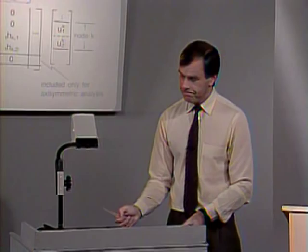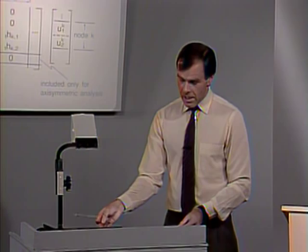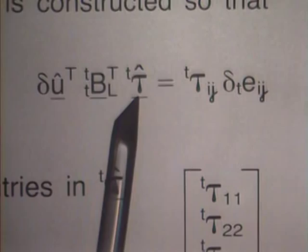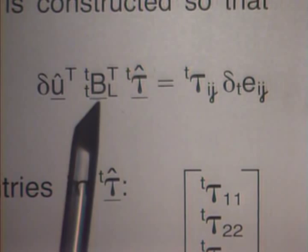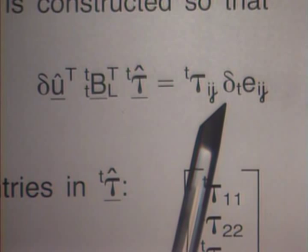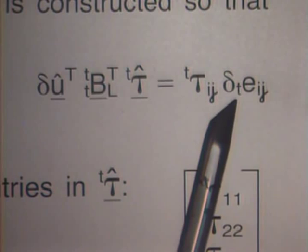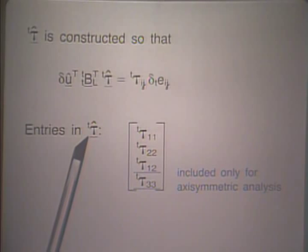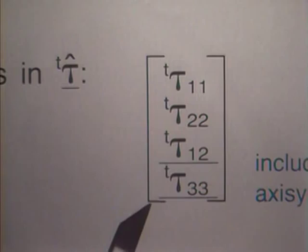Finally, we construct the stress vector T tau hat such that its product with the BL matrix captures the required internal force term from continuum mechanics. T tau hat lists all the Cauchy stresses, including the hoop stress if you have an axisymmetric analysis. This completes the presentation of the two-dimensional elements for both the total Lagrangian and updated Lagrangian formulations.